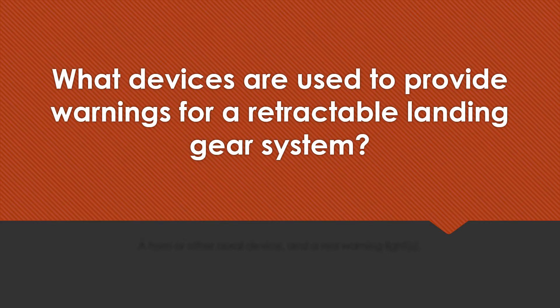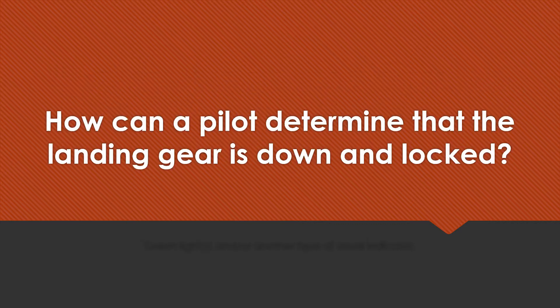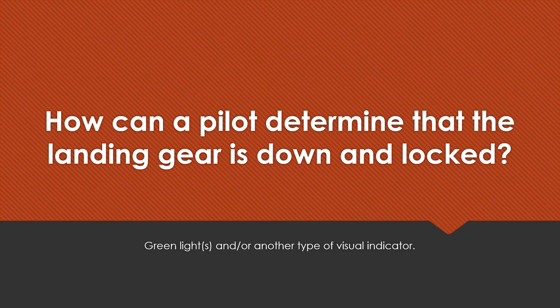What devices are used to provide warnings for a retractable landing gear system? A horn or other aural device and a red warning light or lights. How can a pilot determine that the landing gear is down and locked? Green light or lights and/or another type of visual indication.